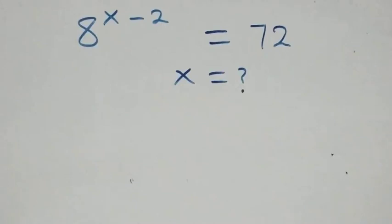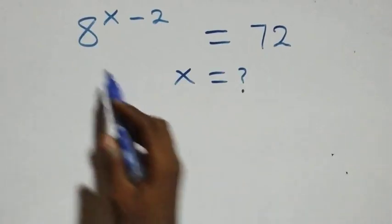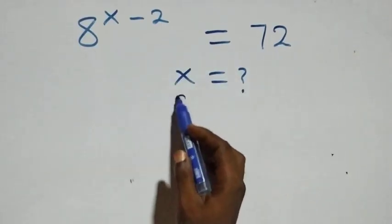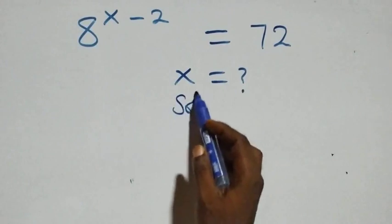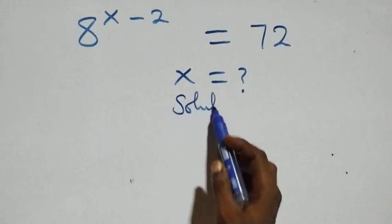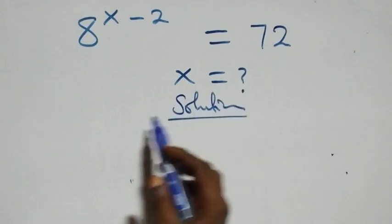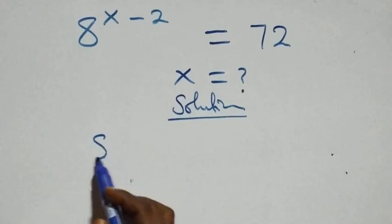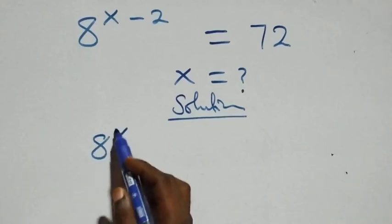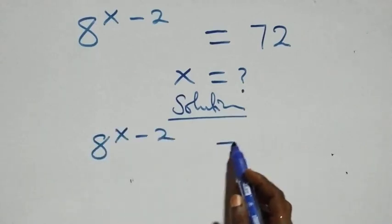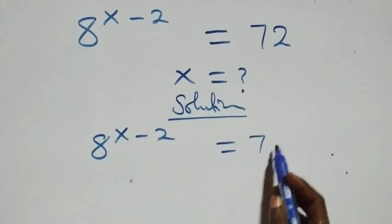Hello, you're welcome. Here's how to solve this nice exponential equation. What we have is 8 raised to power x minus 2 equals 72.